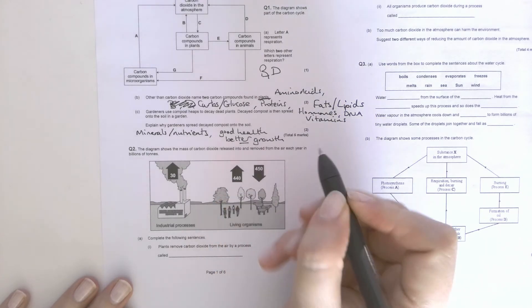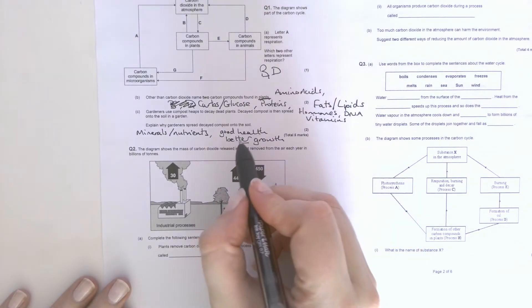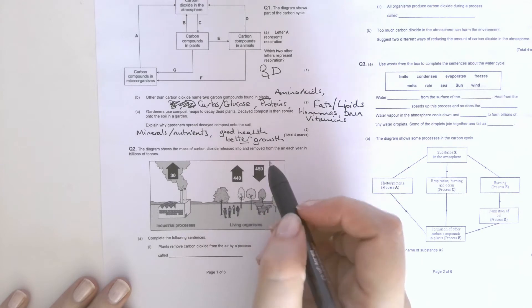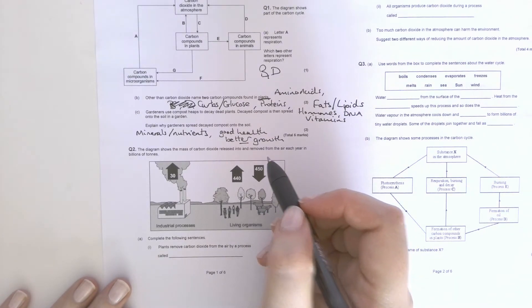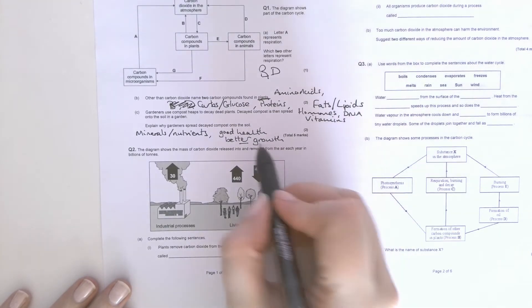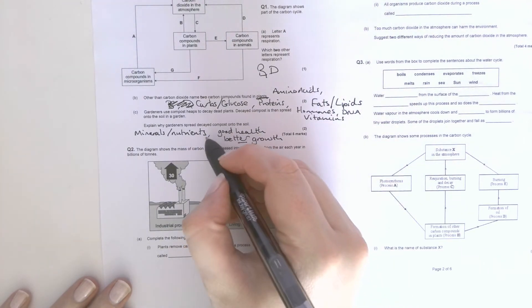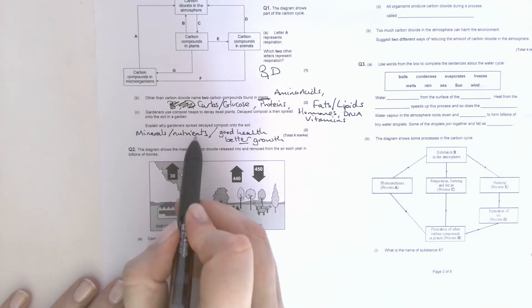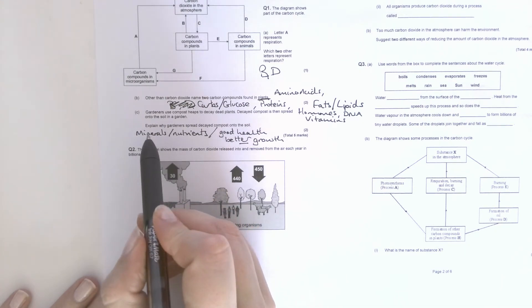And then the second mark was weirdly specific in that it was for good health or better growth. Some of you said good growth, but because the mark scheme was specific that it had to be better and that good growth on its own wasn't sufficient, I had to be a bit mean there. But yeah, good health or better growth, so the idea that it's minerals and nutrients or ions in the soil from the decaying plants and that's for better growth.